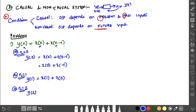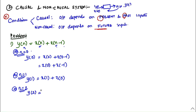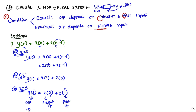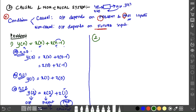We will check values at n = 0, 1, 2. When n = 0: y(0) = x(0) + x(0−1) = x(0) + x(−1). When n = 1: y(1) = x(1) + x(0). When n = 2: y(2) = x(2) + x(1). So at each step we substitute the value of n into the equation.